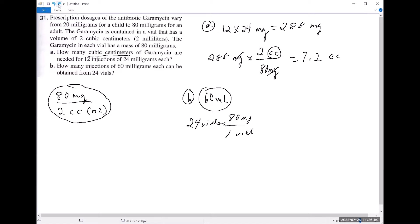Then we look at what—that'll tell us how many total milligrams we'll have in 24 vials of Garamycin. But we need to divide those by 60 so that we end up with however many injections we're able to obtain. So in one injection there are 60 milligrams.